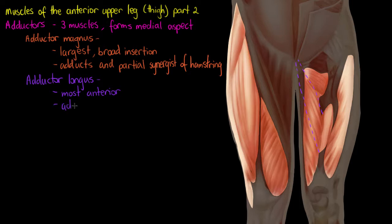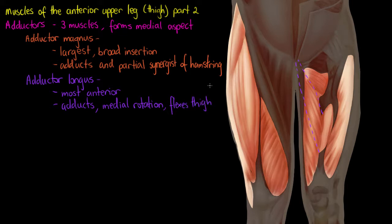Focusing on movements, we're going to be able to adduct with this muscle — bringing the leg closer toward the midline. We'll also be able to slightly medially rotate, spinning or rotating our knee toward our other leg. And the last movement type that this muscle is involved with is flexion of the thigh — lifting your knee upward and decreasing the angle between your hip and your knee.